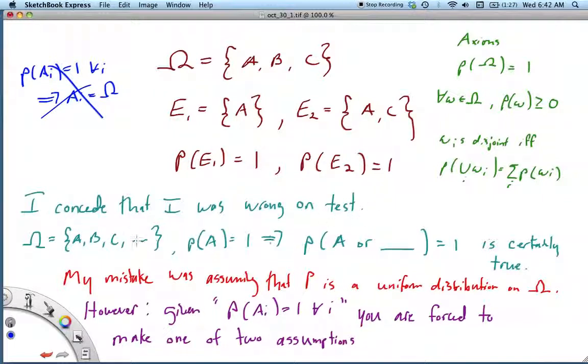The way I can see that now is that for any arbitrary sample space, if the probability of some subset is equal to 1, then logically, by the expansion of OR, the probability of A or anything else would also equal 1. I can see that now.